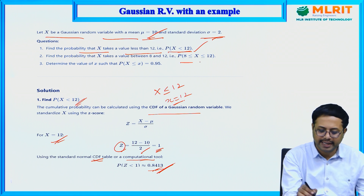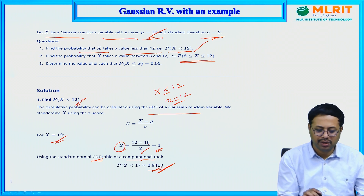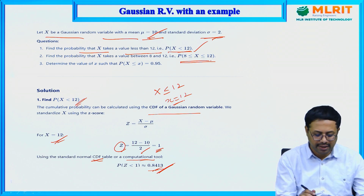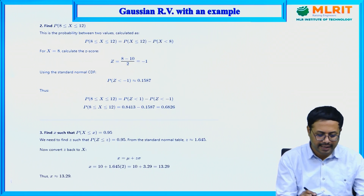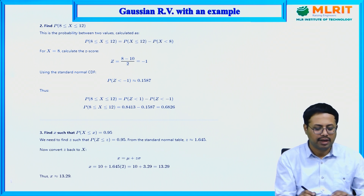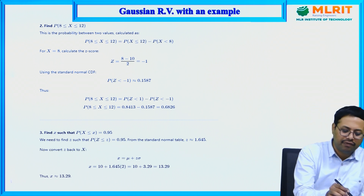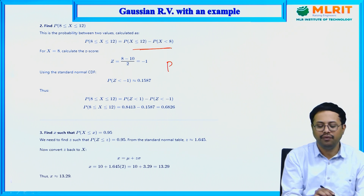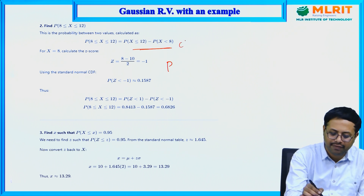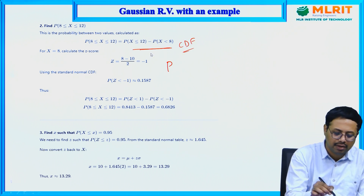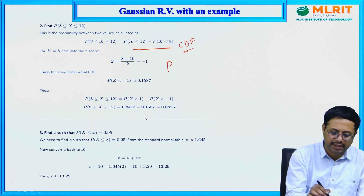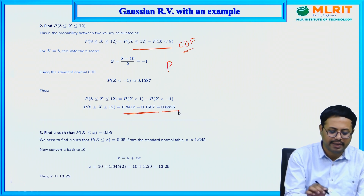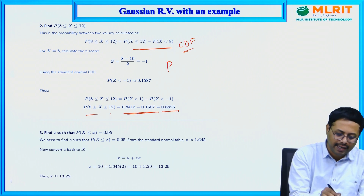For the second question, find the probability that x lies between 8 and 12. Using the CDF property, you compute P(8 ≤ x ≤ 12) by following the same standardization procedure and substituting the values to obtain the resultant probability for that interval.